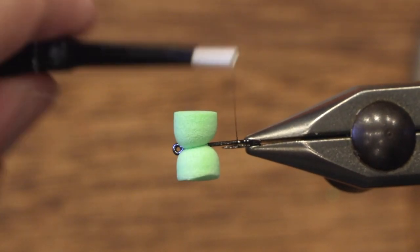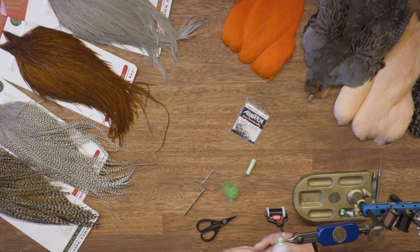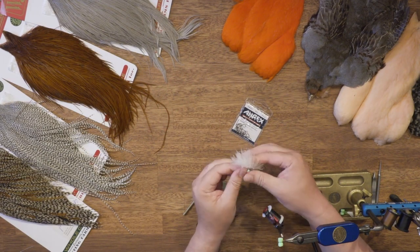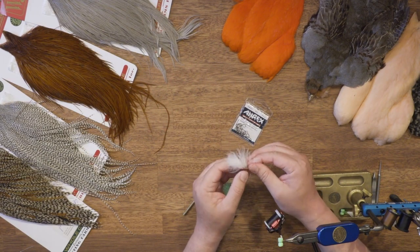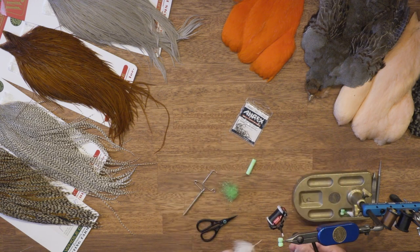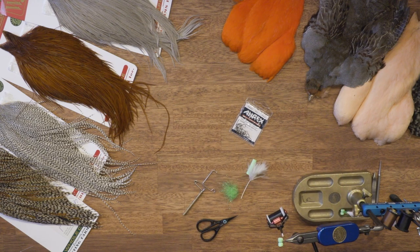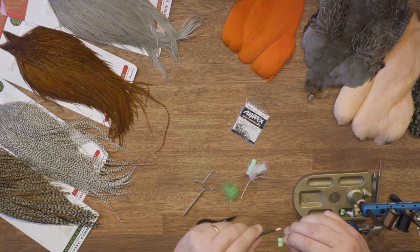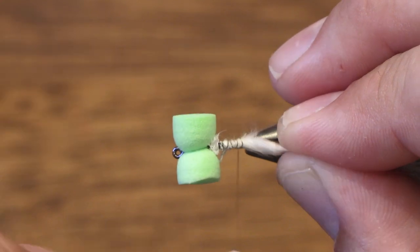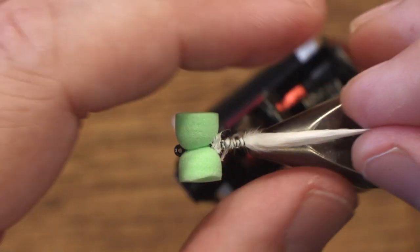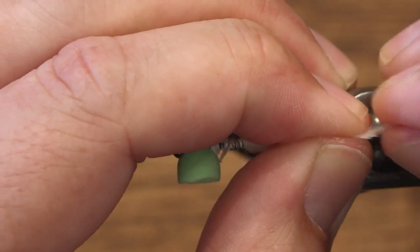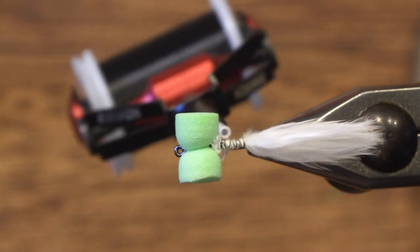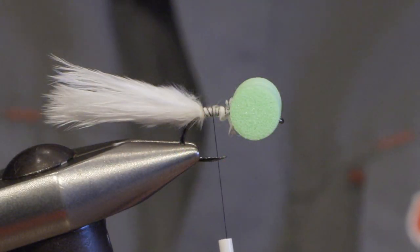And then we tie in a small bunch of white marabou to give the fly even more movement. I don't like the tail to be too long, so I snip it off like this.